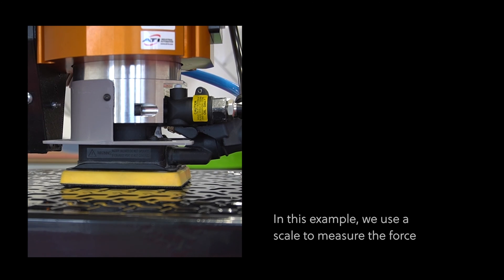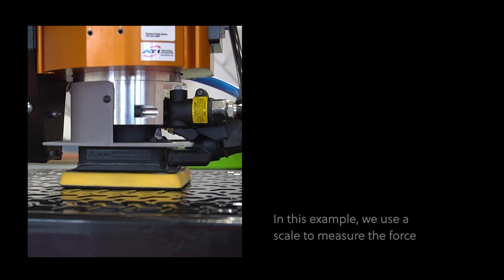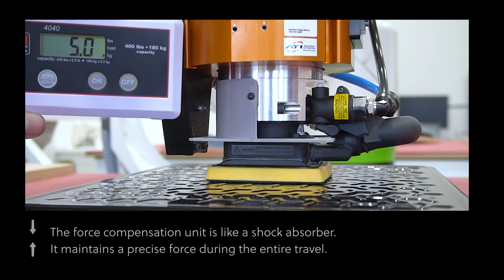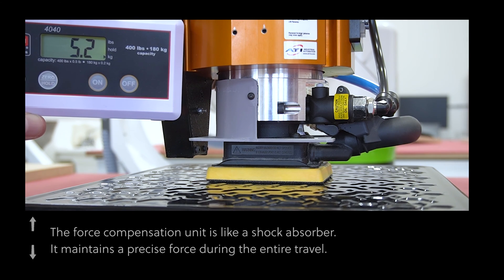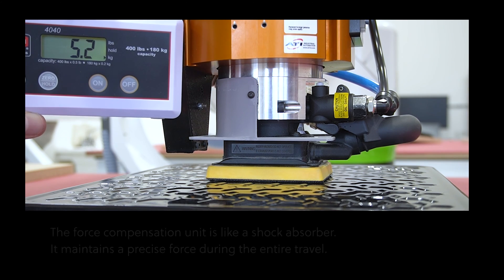In this example, we use a scale to measure the force. The force compensation unit is like a shock absorber. It maintains a precise force during the entire travel.